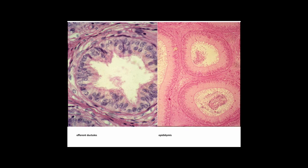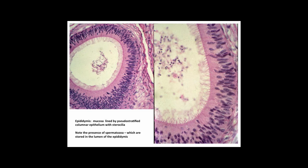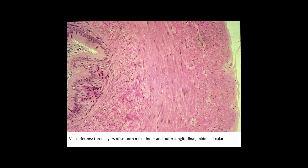Higher power histological views show the efferent ductules on the left with their festooned or sawtooth appearance, and the epididymis on the right with pseudostratified columnar epithelium and very long stereocilia. The epididymis mucosa is lined by pseudostratified columnar epithelium with stereocilia, with spermatozoa stored in the lumen. The vas deferens shows three layers of smooth muscle — inner and outer longitudinal and middle circular — with the mucosa thrown into folds by the substantial muscle layers.